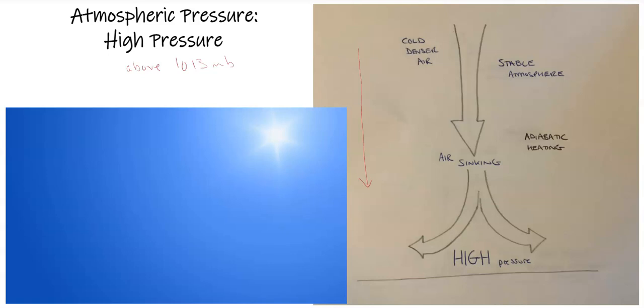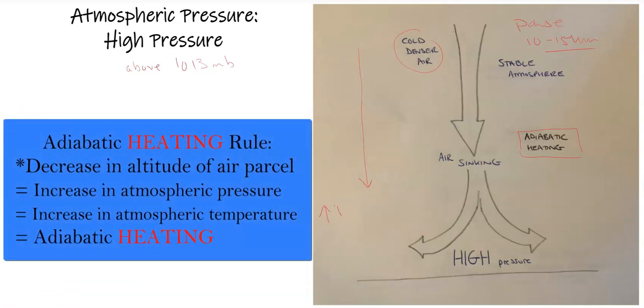So, colder air up by the pores, which is between 10 to 15 kilometers in the air on average, the colder, denser air is going to sink down. As it sinks down, it's going to heat slowly through adiabatic heating, which means as you go down towards the surface, we increase in pressure, which would also increase our temperature of our air parcel.